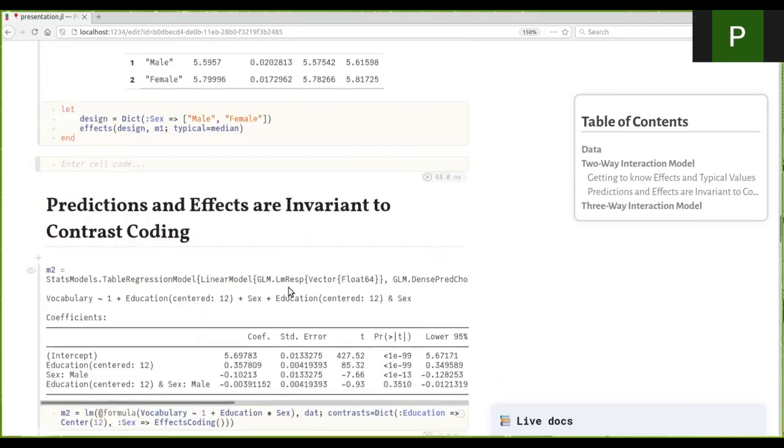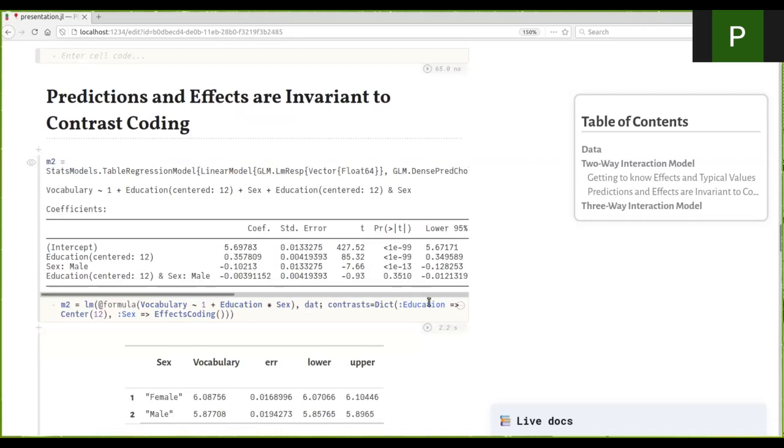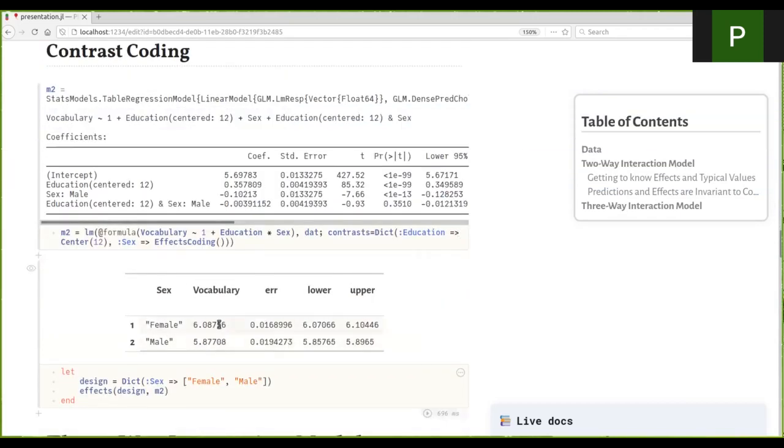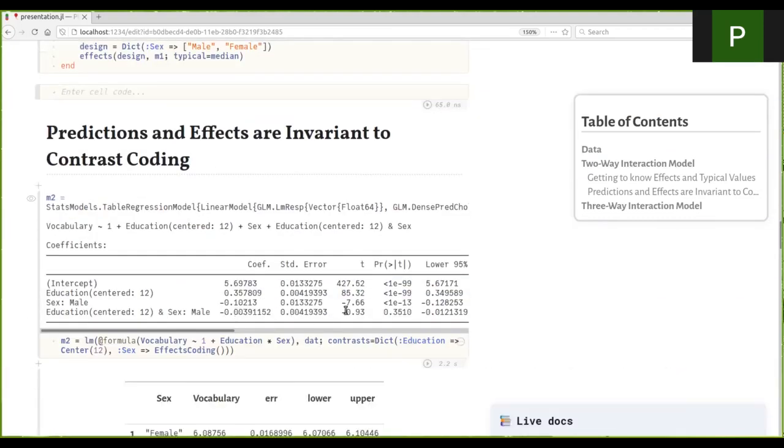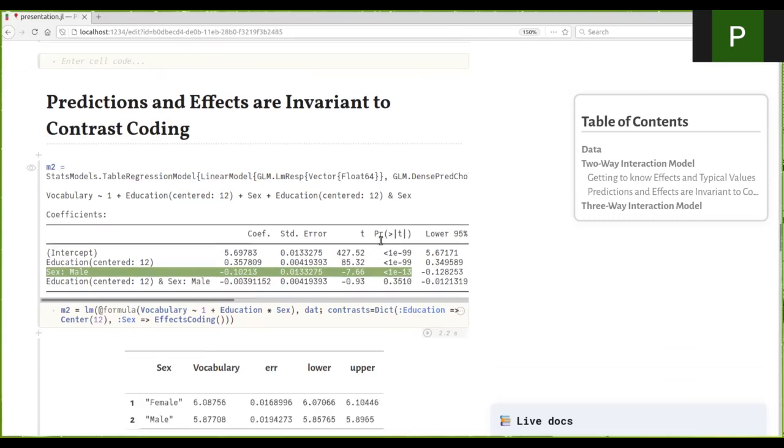The really cool thing about these effects is that like all predictions, they're invariant to contrast coding. For example, here I have the same model but computed with a different set of contrasts. I have centered education and I'm using effects coding for sex, and these predictions that you get here are the same as the ones we got previously for the effects, even though the coefficients have changed and even the significance pattern has changed. There is, for effects coding, the coefficient for male is significant but not for dummy coding. This makes sense because they're testing different hypotheses, but the predictions these models make are the same. This is a really nice way to think about your data because you're thinking about your model back in the data space.